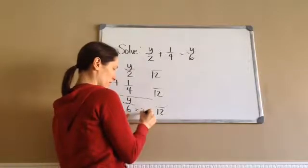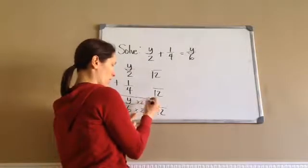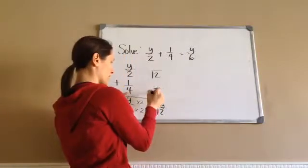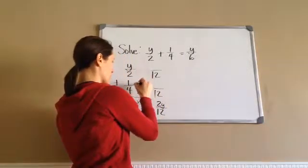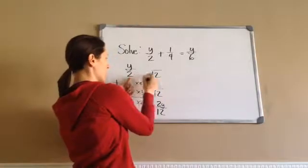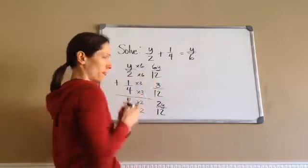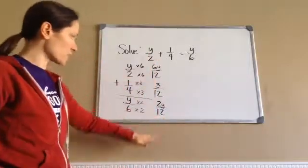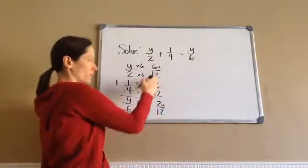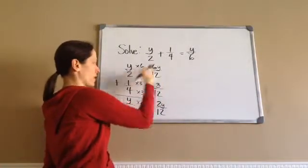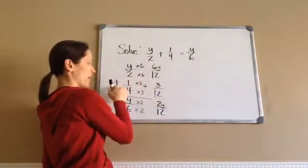6 times 2. So then we get Y times 2, which is just 2Y. 4 to get to 12 is times 3, so we do times 3. 2 times 6, 6Y. Now, once you get it to this place, basically what you're going to do is forget the 12s. And what you're going to do is add or subtract. This is an add one. You're basically going to write your numerator.